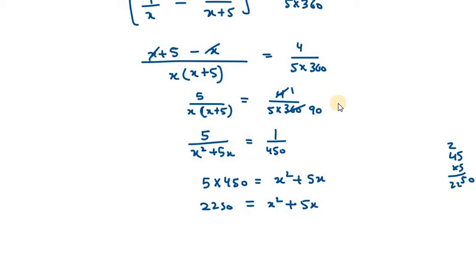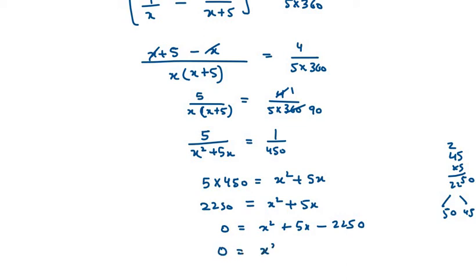5 times 450 equals 2250, so we have x squared plus 5x equals 2250. Rearranging: x squared plus 5x minus 2250 equals 0. To factor, we note that 50 times 45 equals 2250, so 5x splits as 50x minus 45x, giving x squared plus 50x minus 45x minus 2250.